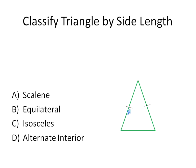This one here marked with tick marks shows us that these two sides are congruent. So what kind of triangle is that — scalene, equilateral, isosceles, or alternate interior angle? This one is definitely an isosceles triangle.